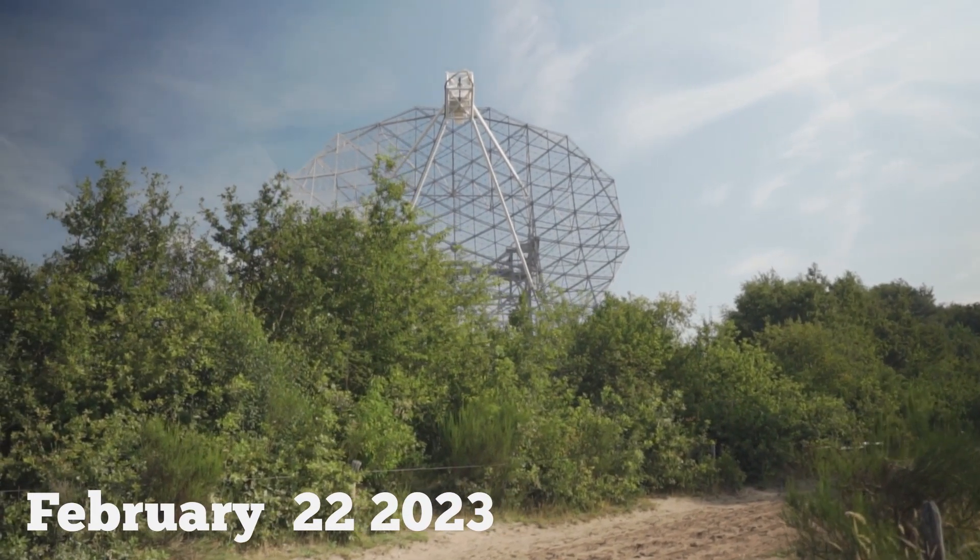At the current distance, C2023A3 Tsuchinshan Atlas can only be seen with large, powerful telescopes. However, if the comet does not disappoint, as early as summer of 2024, we should be able to observe it with smaller, at-home telescopes. By September of 2024, it is likely that we will be able to see Tsuchinshan Atlas by binoculars or even the naked eye. Calculations predicted to be low in the eastern sky just before dawn. Only then will we get a hint as to the age and activity level of the comet by perceiving its brightness.